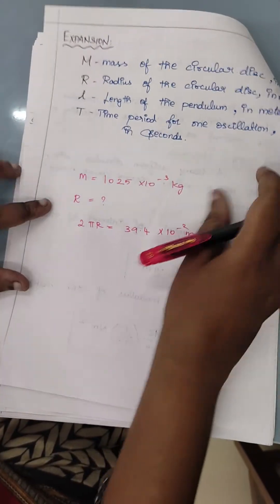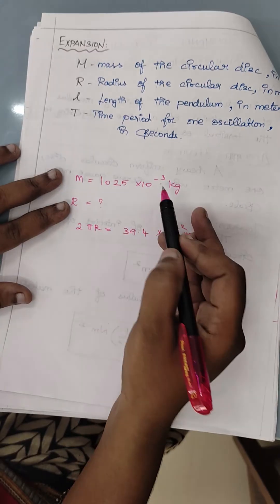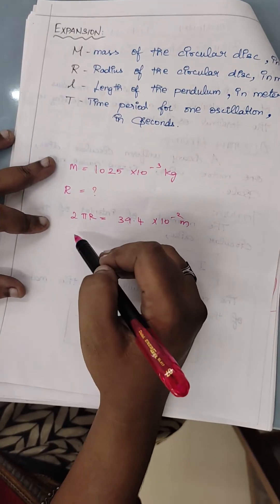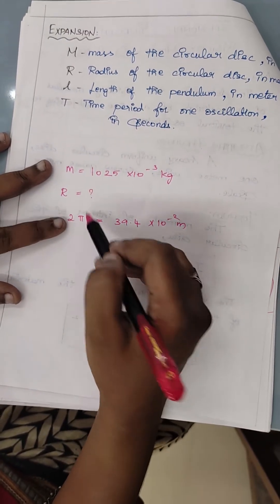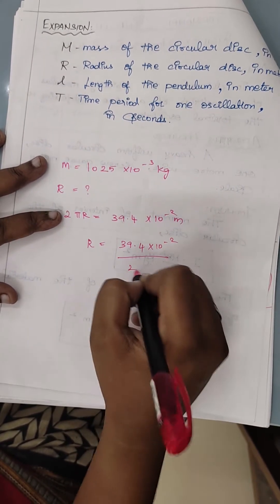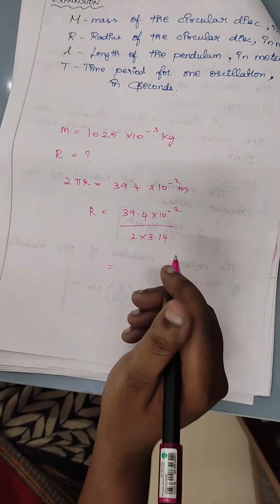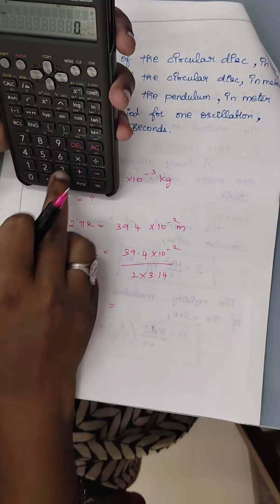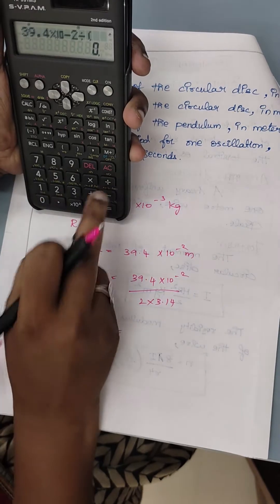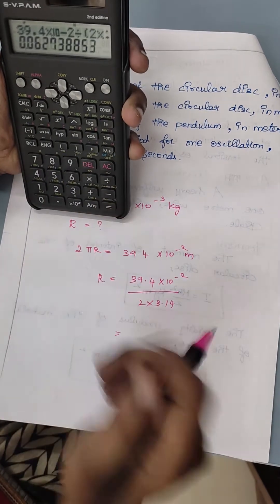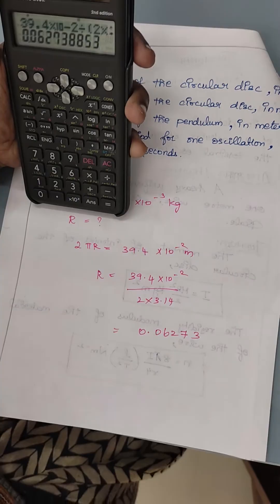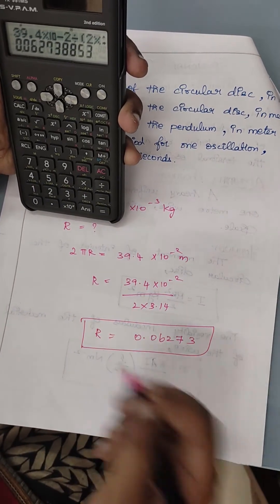The mass of the disc is 1025 grams, i.e., 1025 × 10⁻³ kg. R is found from the circumference of the disc: circumference = 2πR. So R = 39.4 × 10⁻² / (2 × 3.14), which gives R = 0.06273 m. This is our R value.